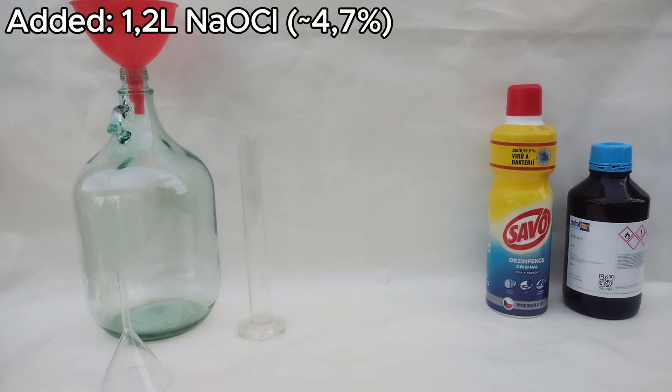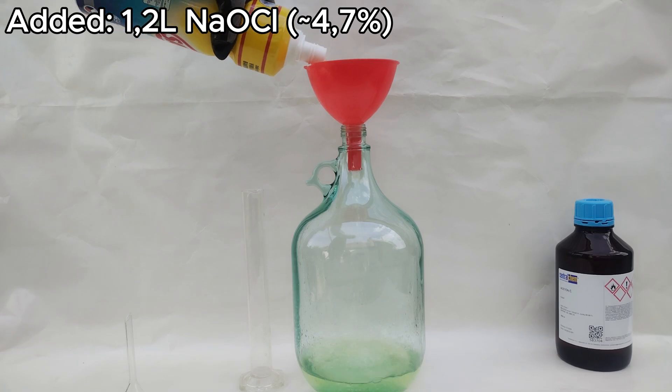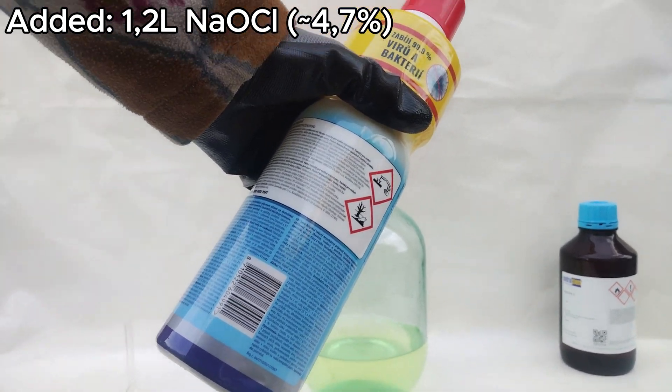So I measure out 1.2 liters of 4.6% bleach, which you can find in the supermarket. Obviously, it's at a low concentration, but it's hard to find high concentration bleach here in Slovakia since we don't really use it.